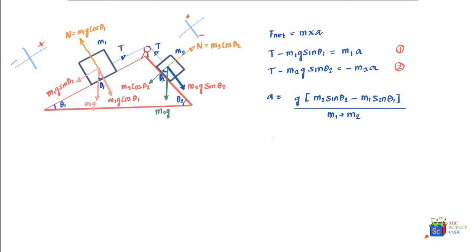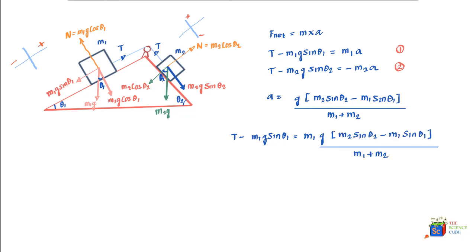Once we have acceleration A, substitute it into equation 1: T minus M1g sine theta1 equals M1 times A. Rearranging and solving for T gives: T equals G times M1 times M2 divided by (M1 plus M2), multiplied by (sine theta1 plus sine theta2).